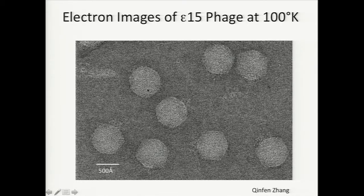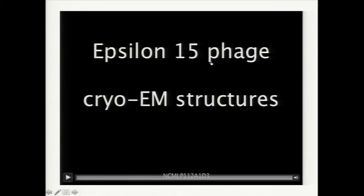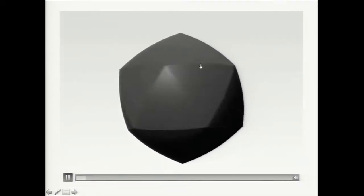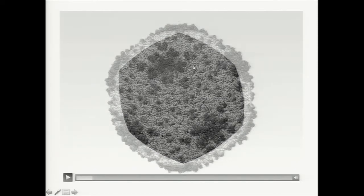From two-dimensional information we convert back to three-dimensional structures. In this particular case, each of the bacteriophages is oriented somewhat differently from one another, so the computer program searches for the orientation of each particle and combines them in 3D space to reconstruct a three-dimensional image. Here is a movie of what we can get by combining 20,000 particles. It turns out this bacteriophage is equivalent to a buckyball — in engineering and physics terms, it has 60 repeat copies with five-, three-, and two-fold symmetries. I call this a biological buckyball.